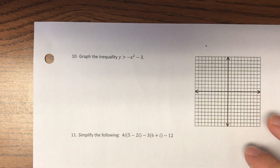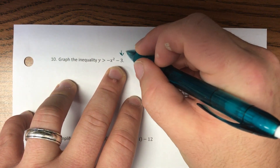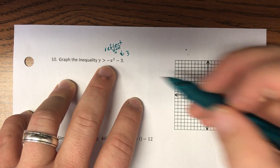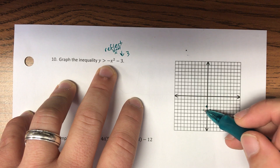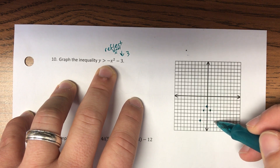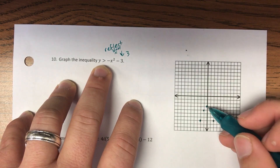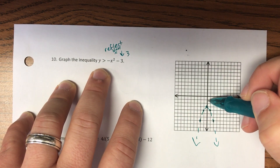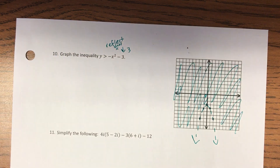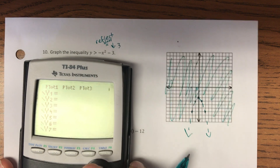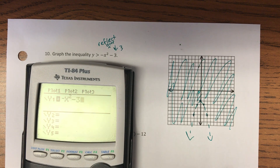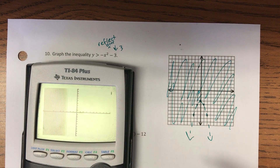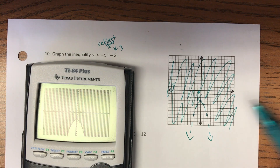Number ten — we're going to graph this inequality. The transformation goes down 3 and reflects over the x-axis because of the negative in front. We start the vertex at (0, −3); instead of going over 1 and up 1, we go down 1 due to the reflection, then over 2, down 4. This one does not have the equals sign, so it's a dotted parabola. It says greater than, so we shade everything above the vertex — outside the parabola. You can verify in your calculator by entering −x² − 3 with greater-than shading.